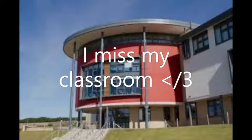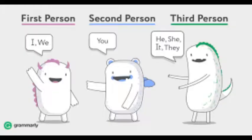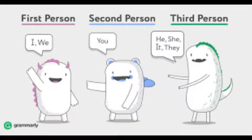We also talk about perspective when we talk about first person, second person, and third person perspective in narratives. Just for a recap: first person is when we use 'I' or 'we', second person is when you use 'you', and third person is 'he', 'she', 'it', or 'they'.